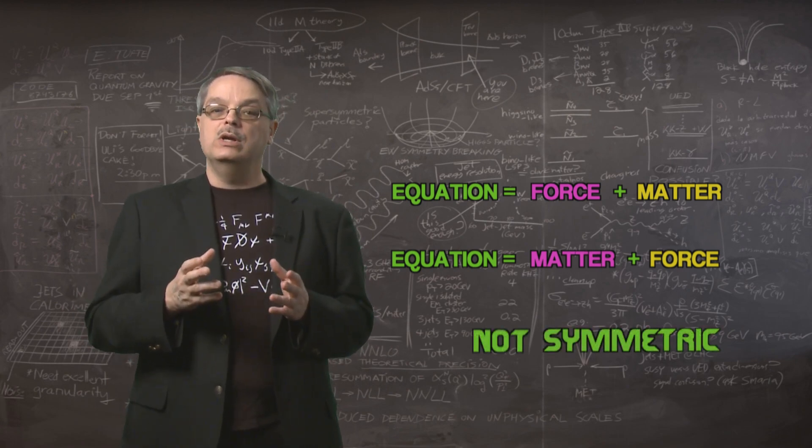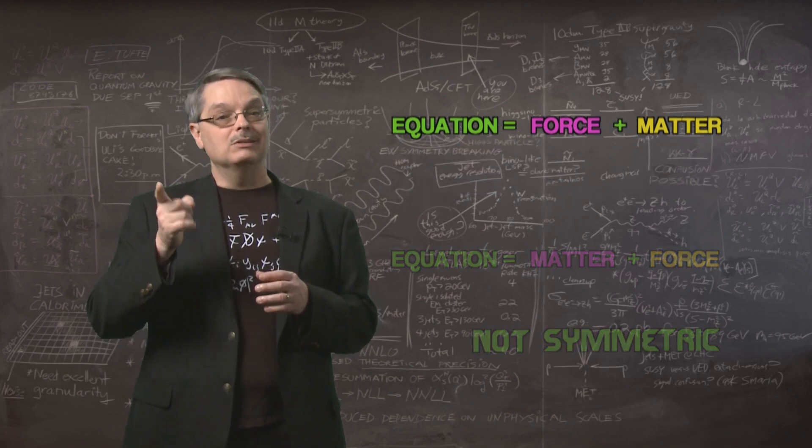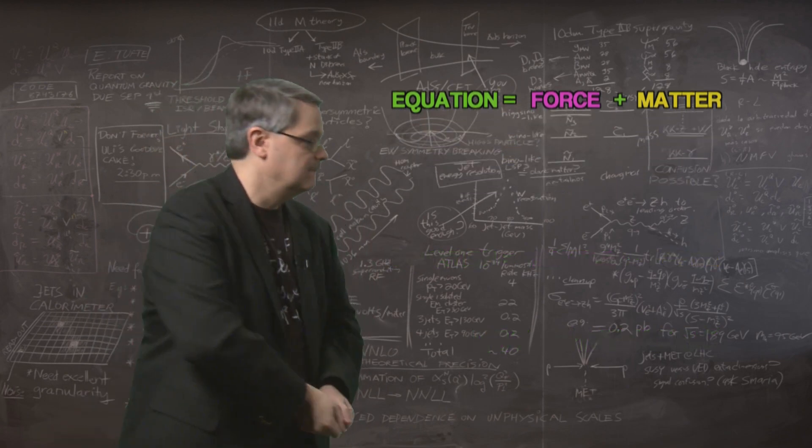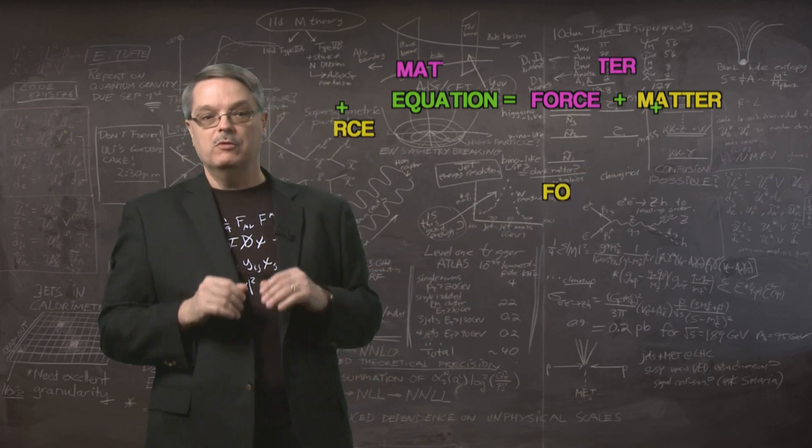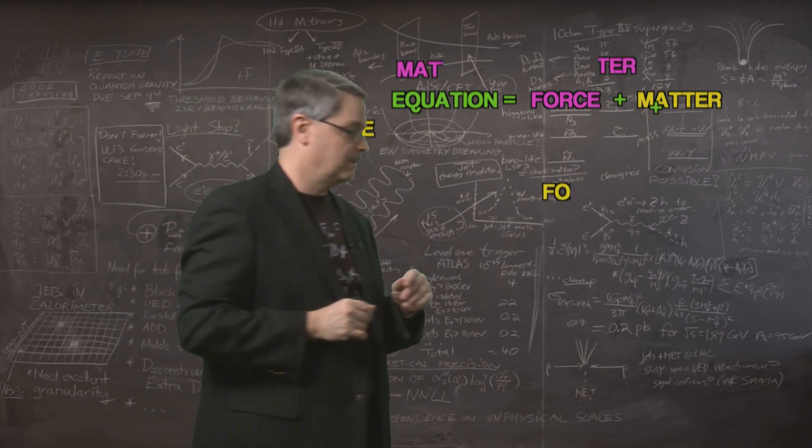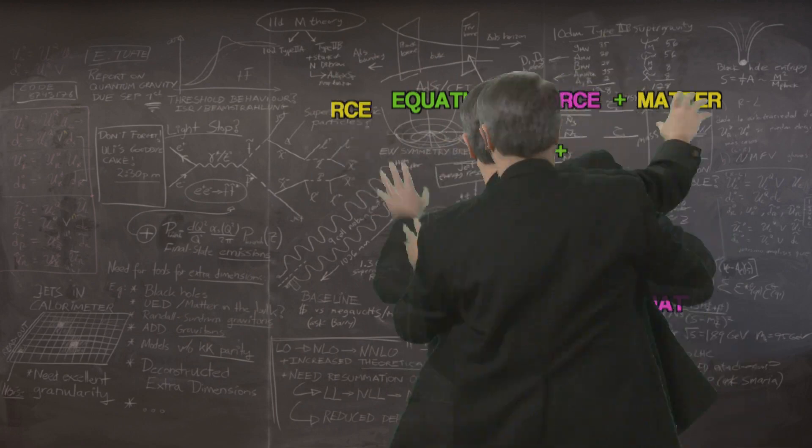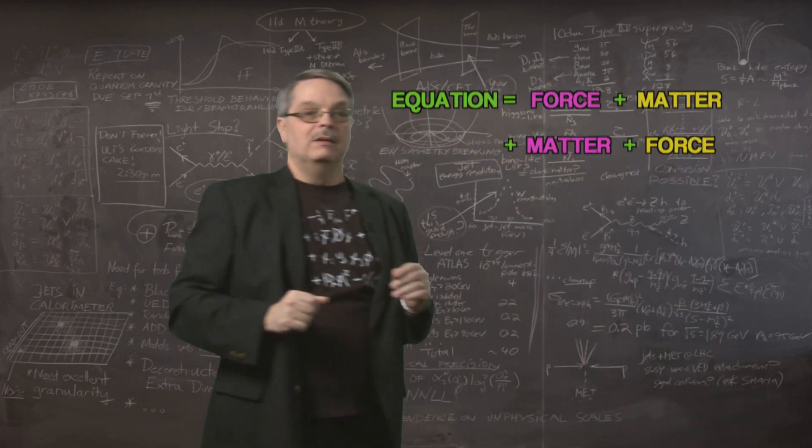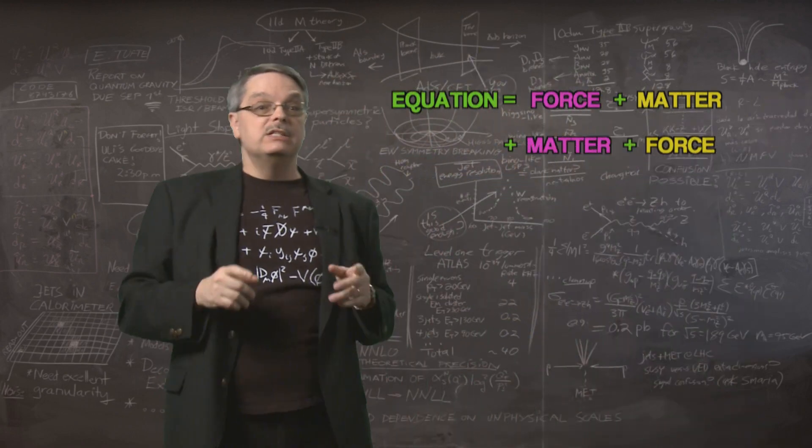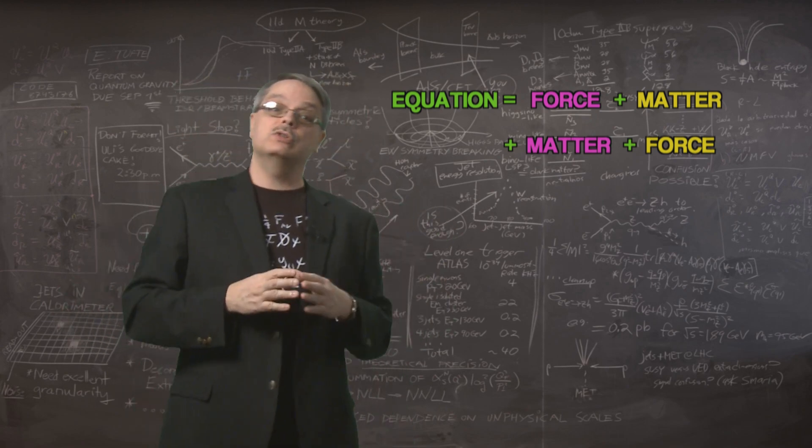So let's see how to make the equation supersymmetric. I'll start by tossing out some building blocks. Now, excuse me for a moment while I make the equation supersymmetric. You see that I've added some terms to the equation, specifically a new matter and a new force term.